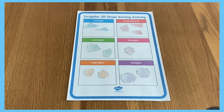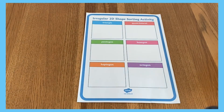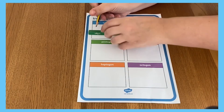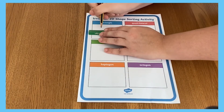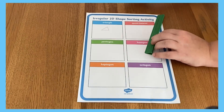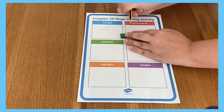Learners could even match the shapes to the correct section by colouring them in the matching colour. To extend this activity and challenge learners further, why not ask them to draw their own examples of irregular 2D shapes for each category, like this.